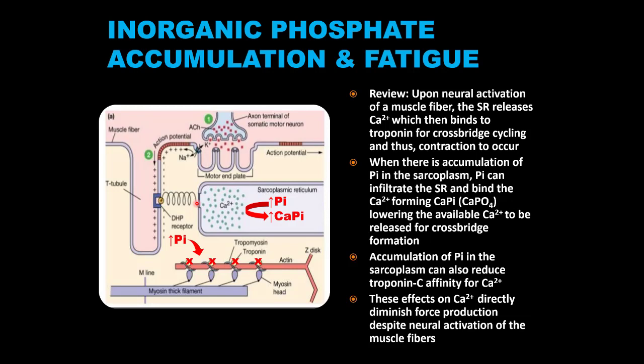Second, accumulated inorganic phosphates can also block calcium from binding with troponin. So in summary, inorganic phosphate accumulation interferes with the role of calcium during contraction, thereby inhibiting muscle contraction. Both proton and inorganic phosphate accumulation inhibit muscle contractions by interfering with the contraction process, preventing binding of calcium to troponin and inhibiting cross-bridge formation. Inorganic phosphate accumulation also inhibits calcium release from the sarcoplasmic reticulum, and proton accumulation stimulates nociception, which can indirectly inhibit muscle contractions.